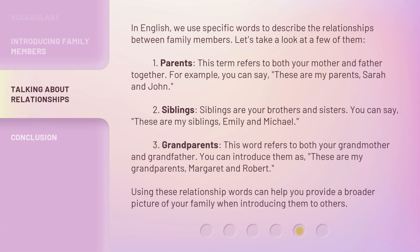In English, we use specific words to describe the relationships between family members. Let's take a look at a few of them. 1. Parents. This term refers to both your mother and father together. For example, you can say, these are my parents, Sarah and John. 2. Siblings. Siblings are your brothers and sisters. You can say, these are my siblings, Emily and Michael. 3. Grandparents. This word refers to both your grandmother and grandfather. You can introduce them as, these are my grandparents, Margaret and Robert. Using these relationship words can help you provide a broader picture of your family when introducing them to others.